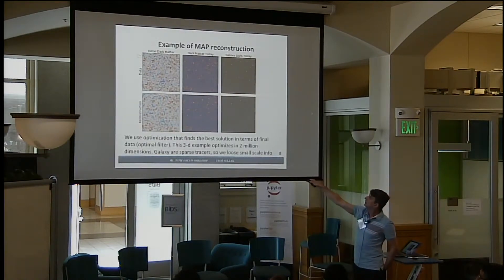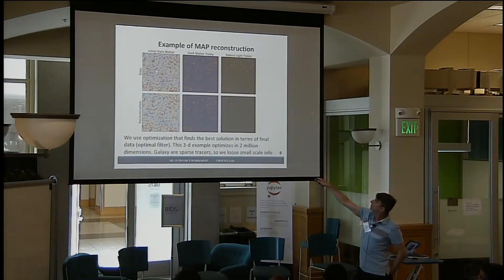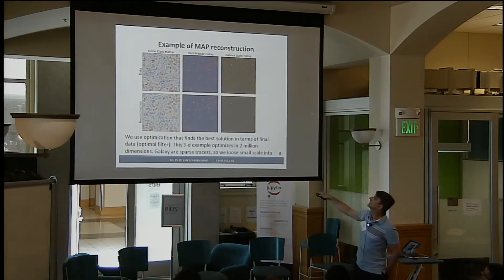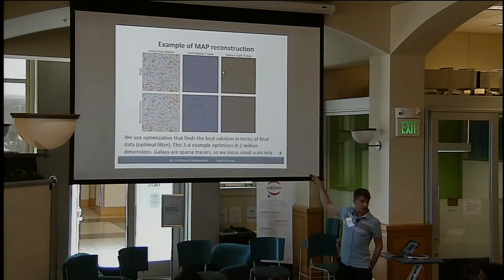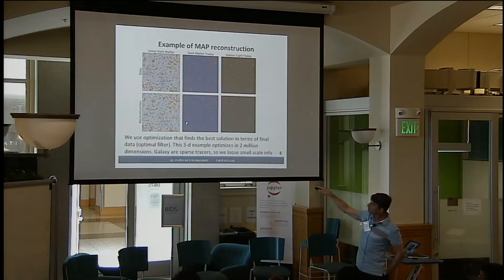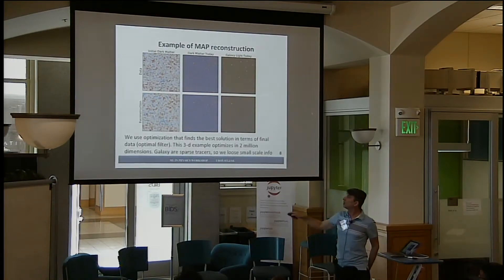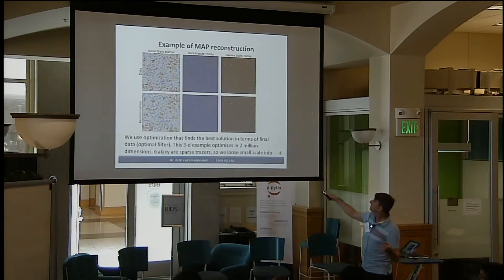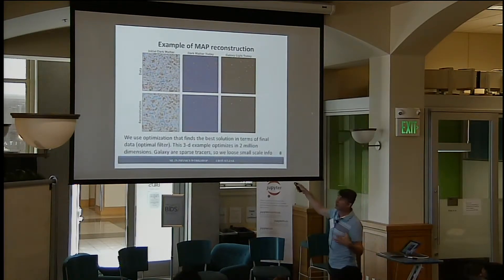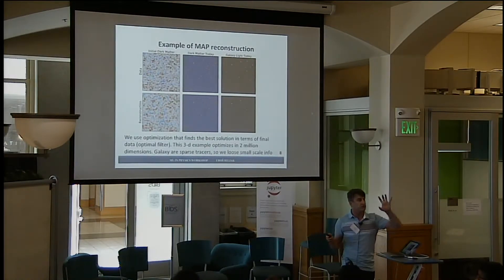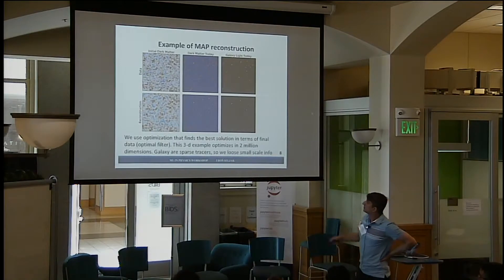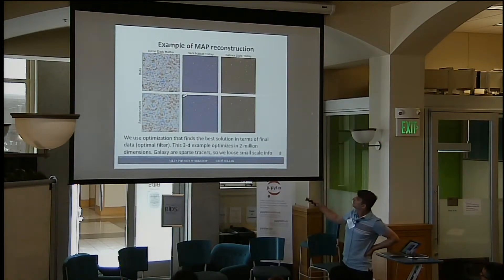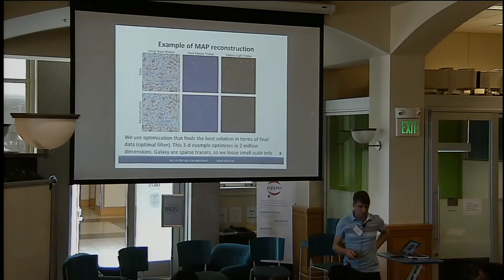Here's an example on a simulation: initial density, dark matter density, light — this is what we observe. We use just this observed light, and this is how well we reconstruct. We reconstruct almost perfectly on the data and on the nonlinear dark matter. On the initial density, we get the large scales but not the small scales, because the small scales have been mapped to such small galaxies that we don't observe them due to luminosity thresholds. That's why we lose high-frequency information. This example used a 2-million dimensional optimization.